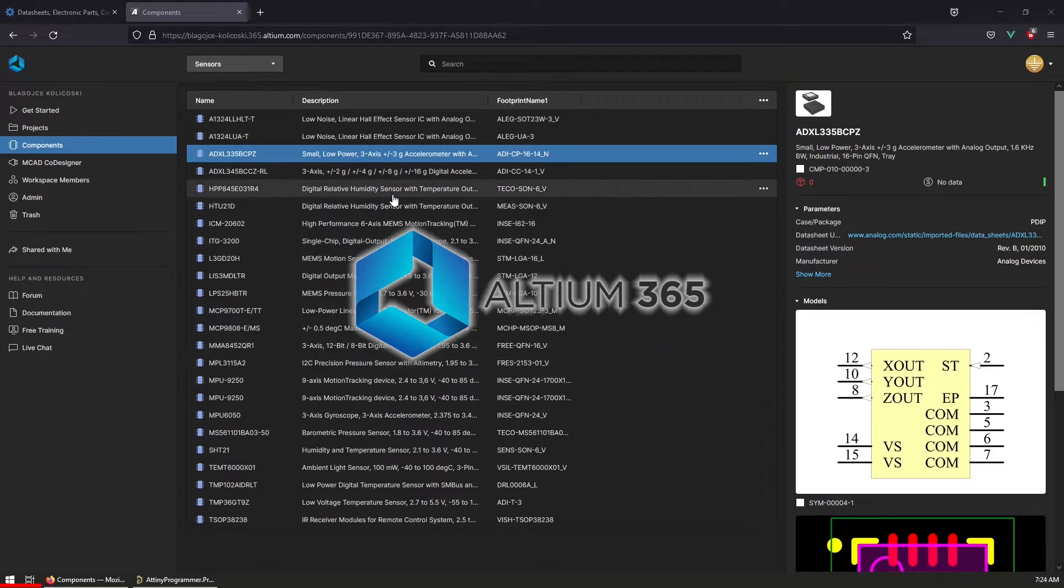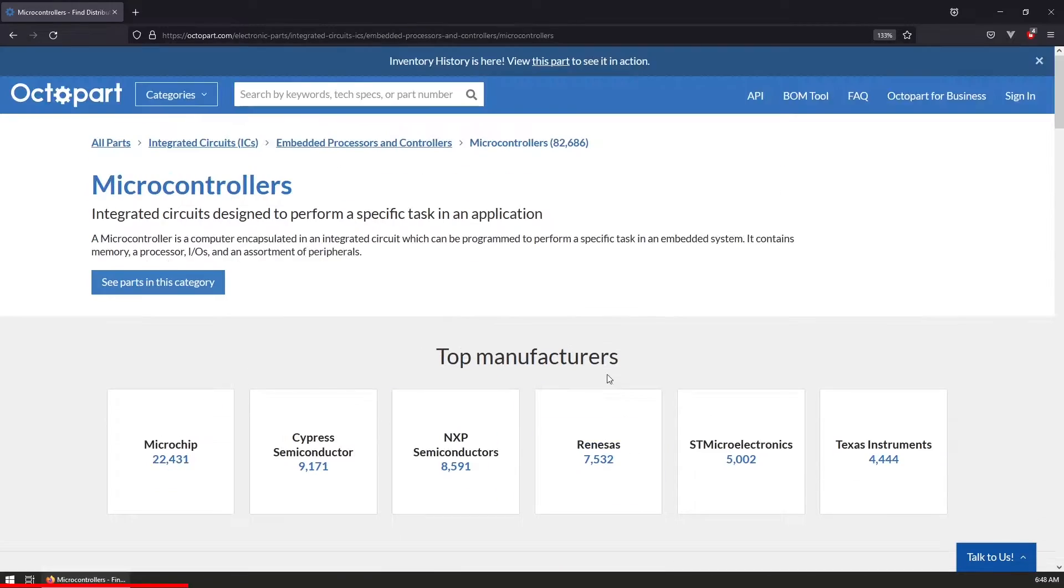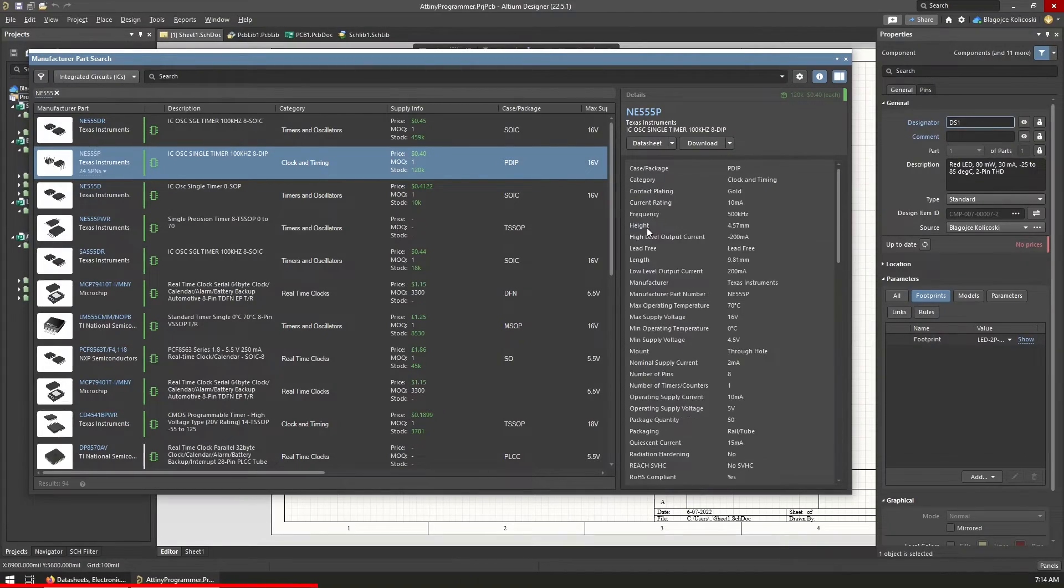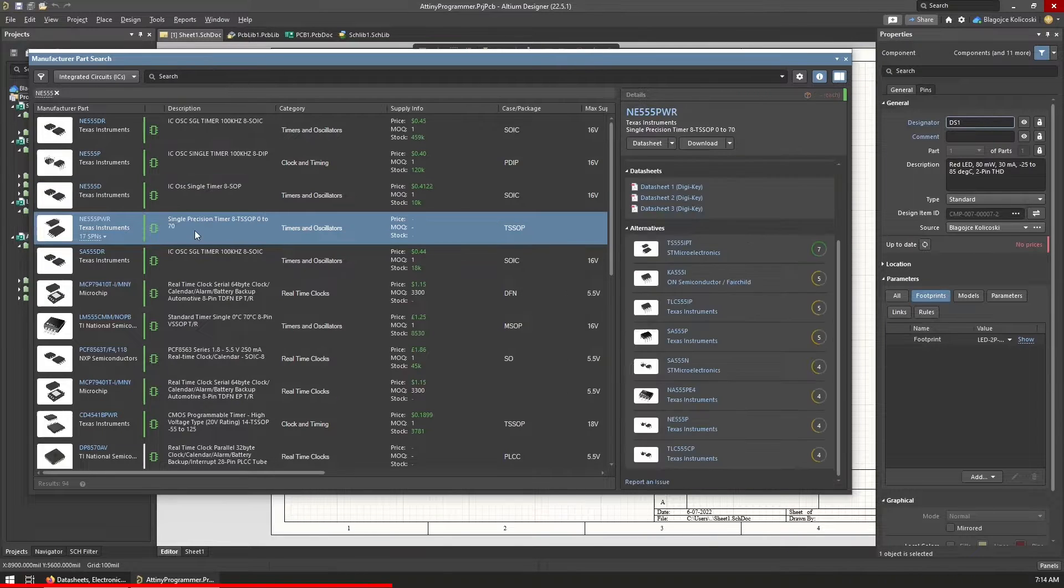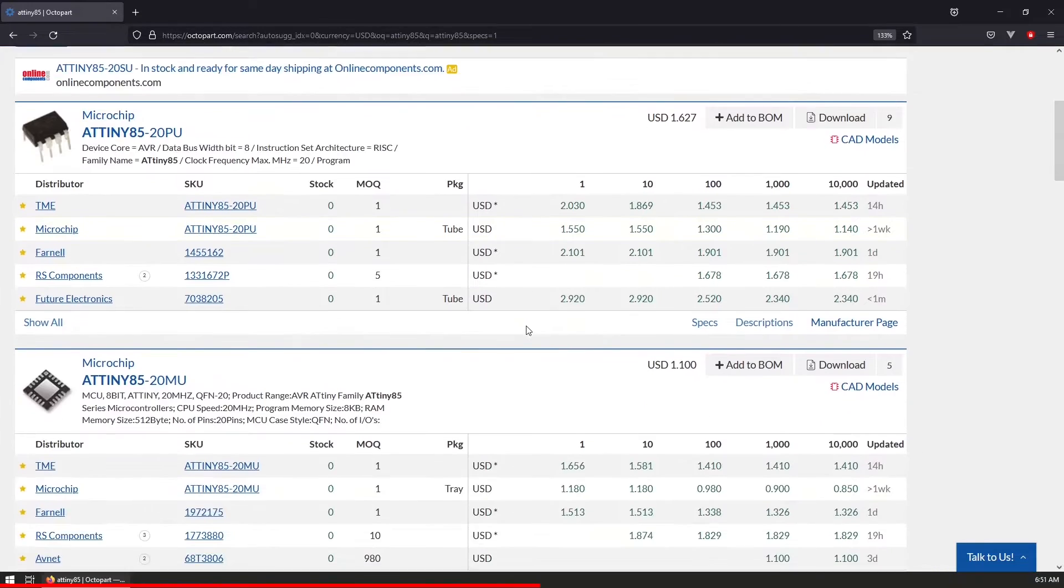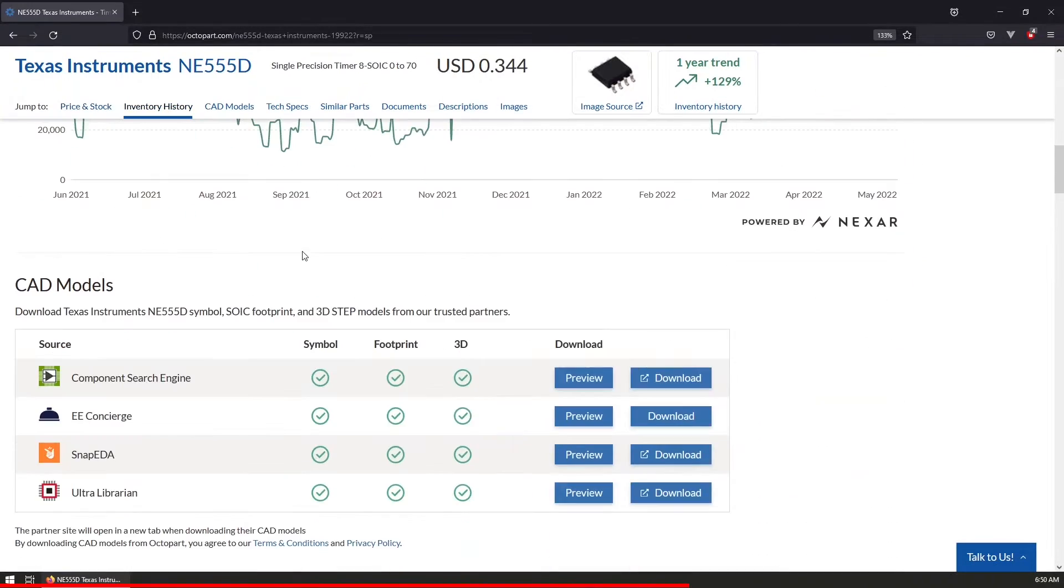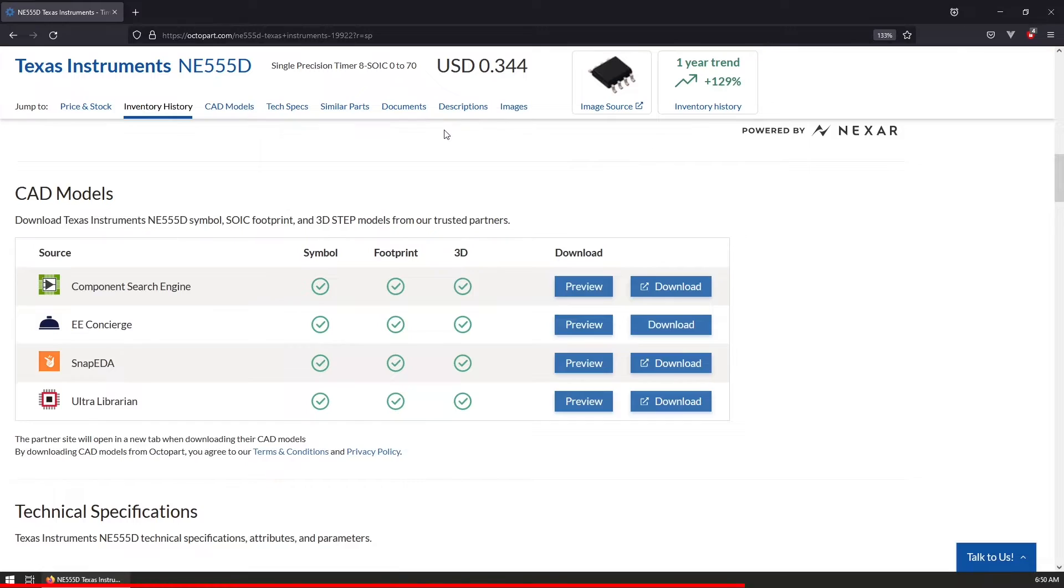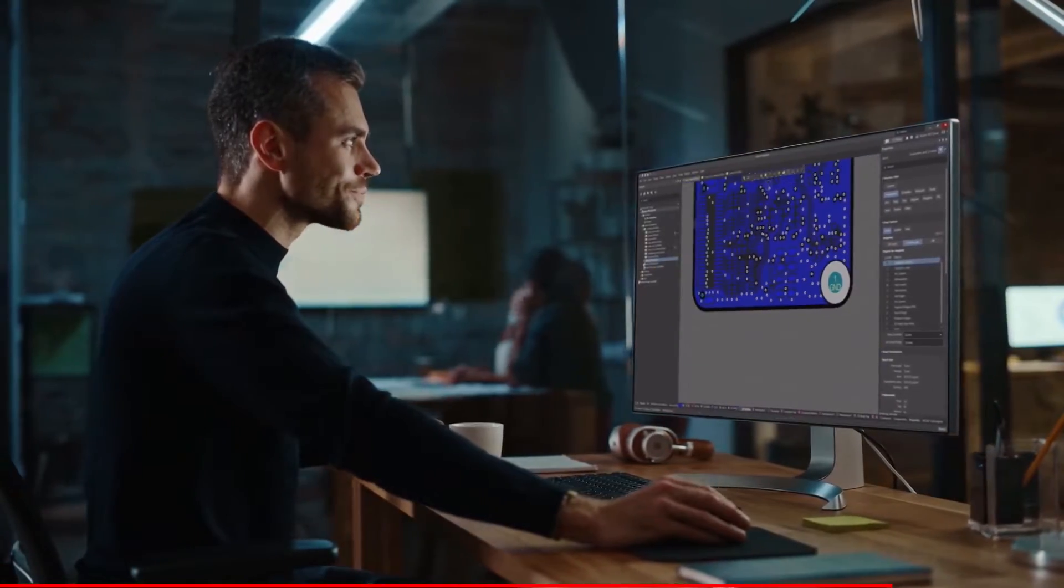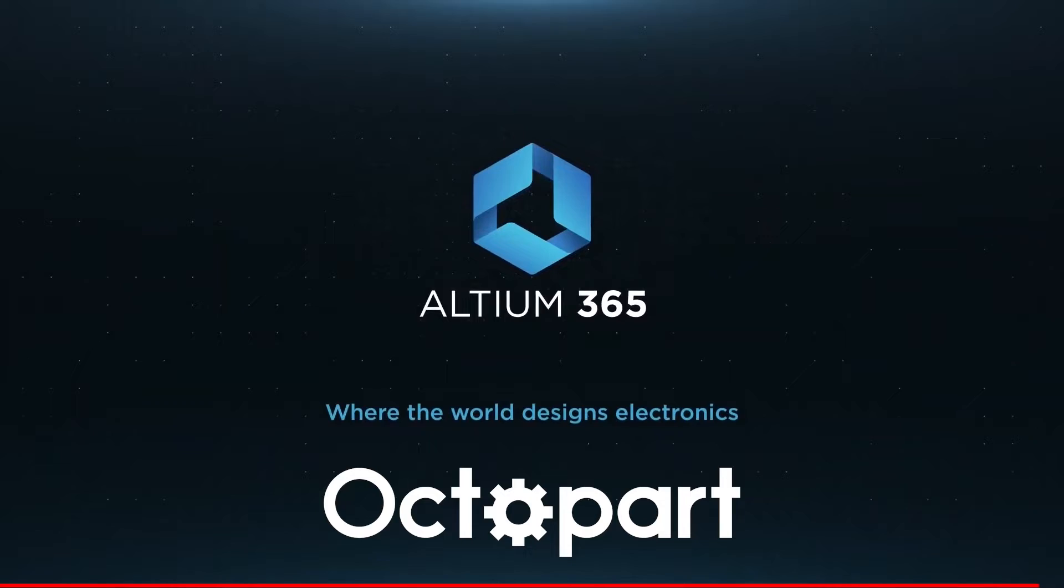This video is sponsored by Altium 365 and its great electronic part search engine Octopart. Octopart is a real-time part selection assistant and search engine used as primary source for component data in Altium Designer and Altium 365. Octopart gives you the most up-to-date part data like specs, data sheets, and CAD models right in the design environment. With built-in stock level tracking, you can stay ahead of supply risks and get automated notifications for low stock levels. Visit the link in the video description to get your Altium Designer free trial along with a free subscription to Altium 365.